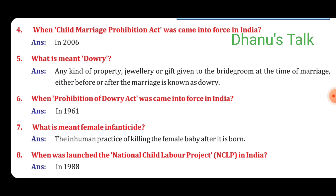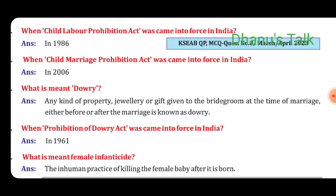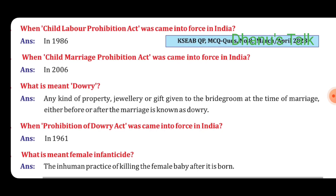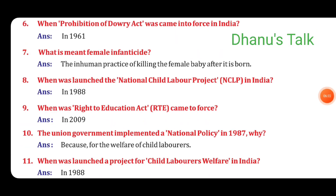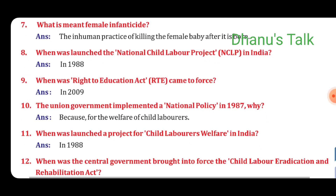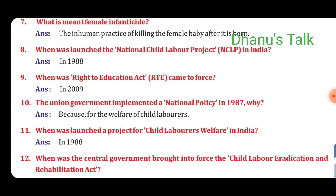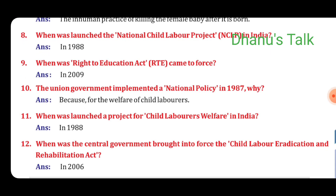Eighth question: When was the National Child Labour Project launched in India? Answer: In 1982. This question was asked as an MCQ in March-April 2023. Ninth: When did the Right to Education Act (RTE) come into force? Answer: In 2009. Tenth question: The union government implemented a national policy in 1987. Why? Answer: For the welfare of child labourers. Question No. 11: When was a project for child labourers' welfare launched in India? Answer: In 1988. Question No. 12: When did the central government bring into force the Child Labour Eradication and Rehabilitation Act? Answer: In 2006.